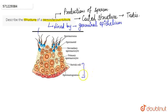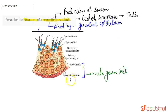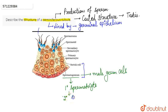First we will discuss what spermatogonium are. Spermatogonium are the male germ cells. What happens is that from the spermatogonium, primary spermatocytes are produced. Meiotic division occurs in spermatogonium that leads to the formation of the primary spermatocyte. Then these primary spermatocytes further undergo meiotic division and form the secondary spermatocyte.